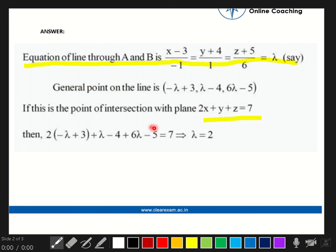Now we have a condition: if this is the point of intersection with plane 2x + y + z = 7, a single point of intersection is given to us. So we can check this value of x, y, z by putting these values into this equation. By solving this equation in terms of lambda, we will get lambda equals 2.